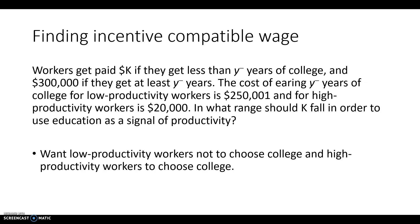When the low productivity workers choose not to go to college and the high productivity workers choose to go to college, we call this an incentive compatible wage structure. We have created the incentive for low productivity workers not to go to college, and an incentive for high productivity workers to go to college, so that we can use that college degree or Y-bar years of college as our signal of which type of worker we're looking at.